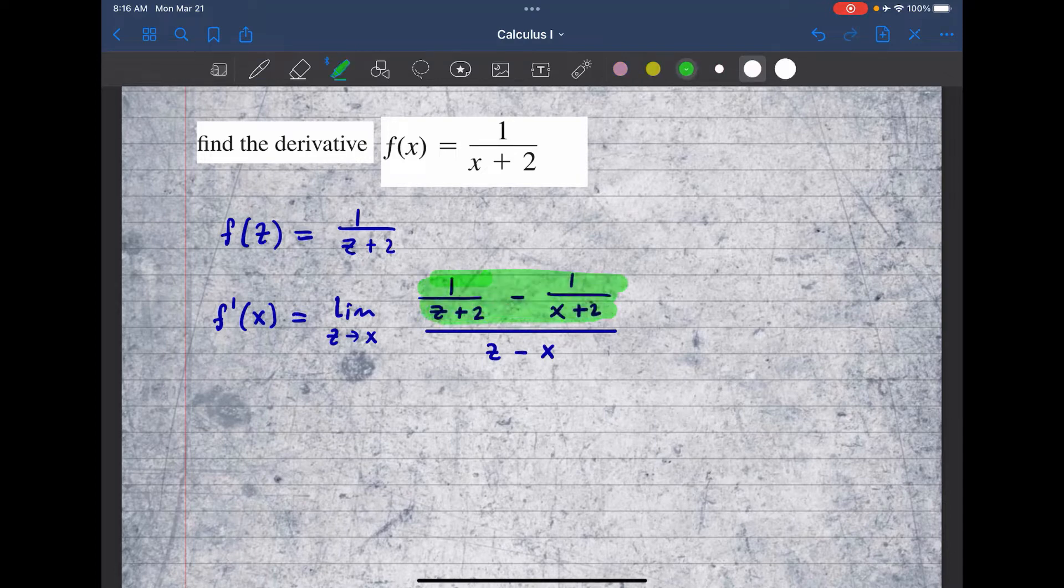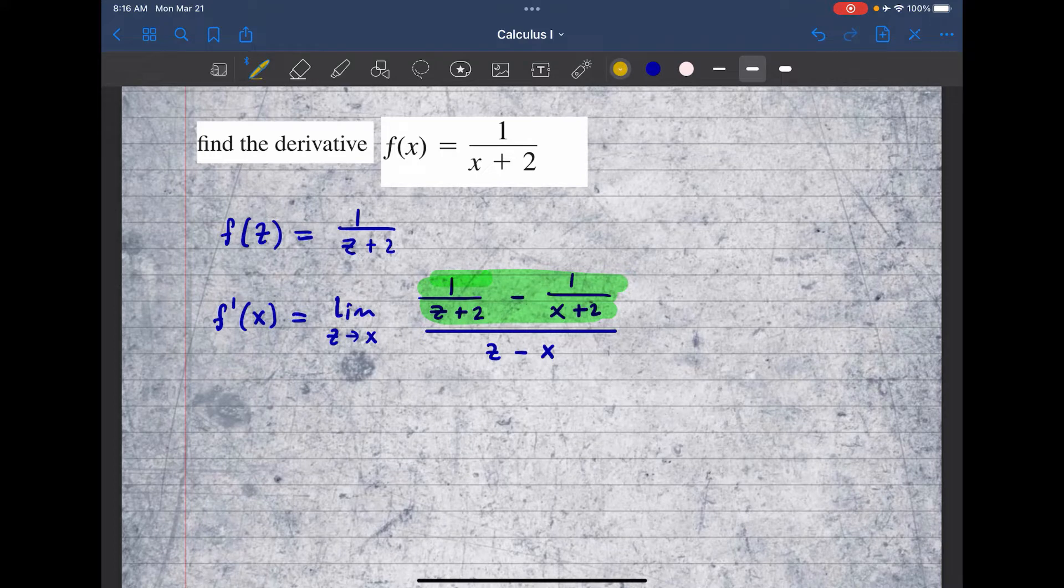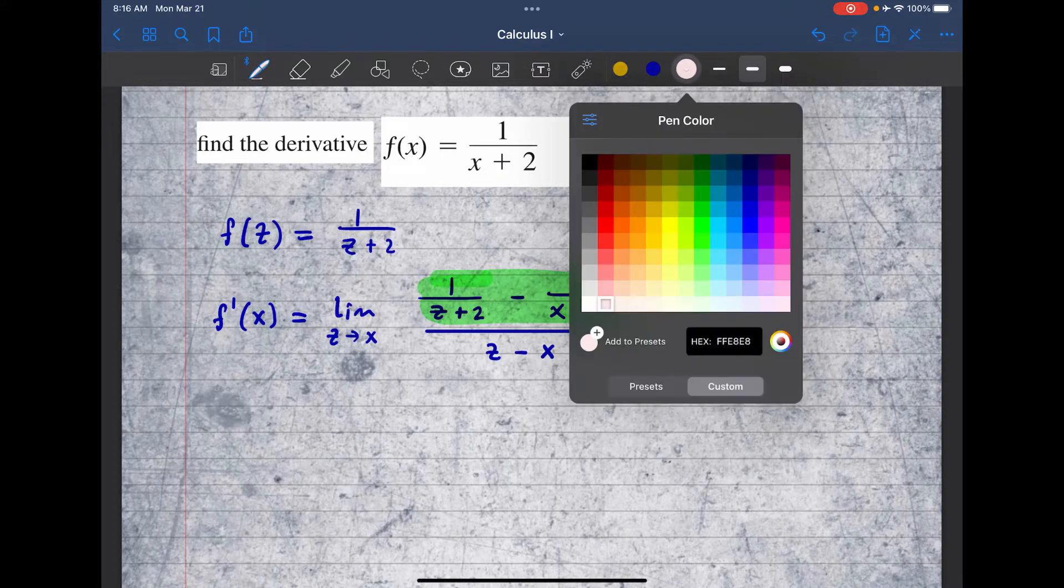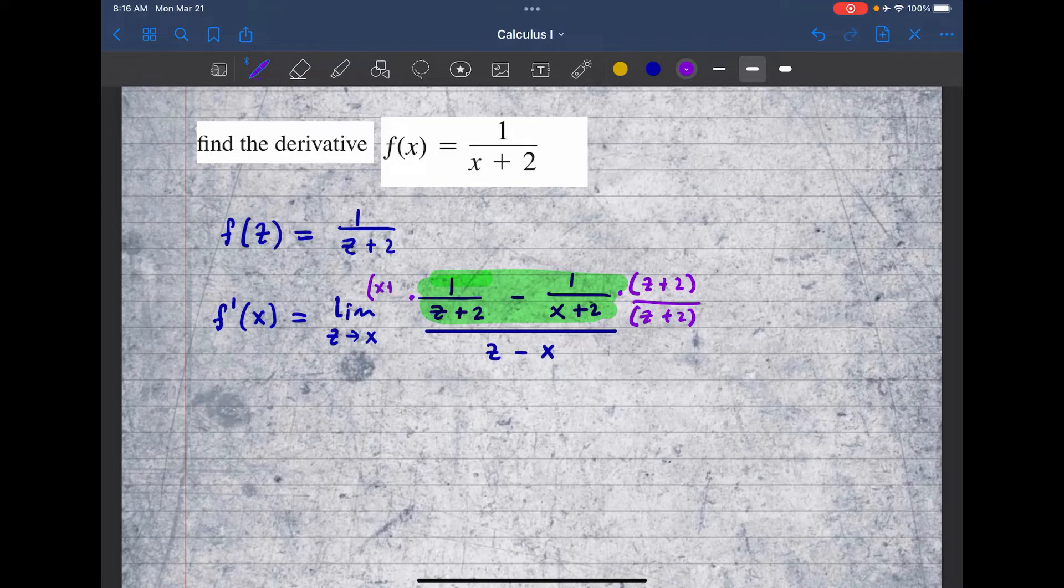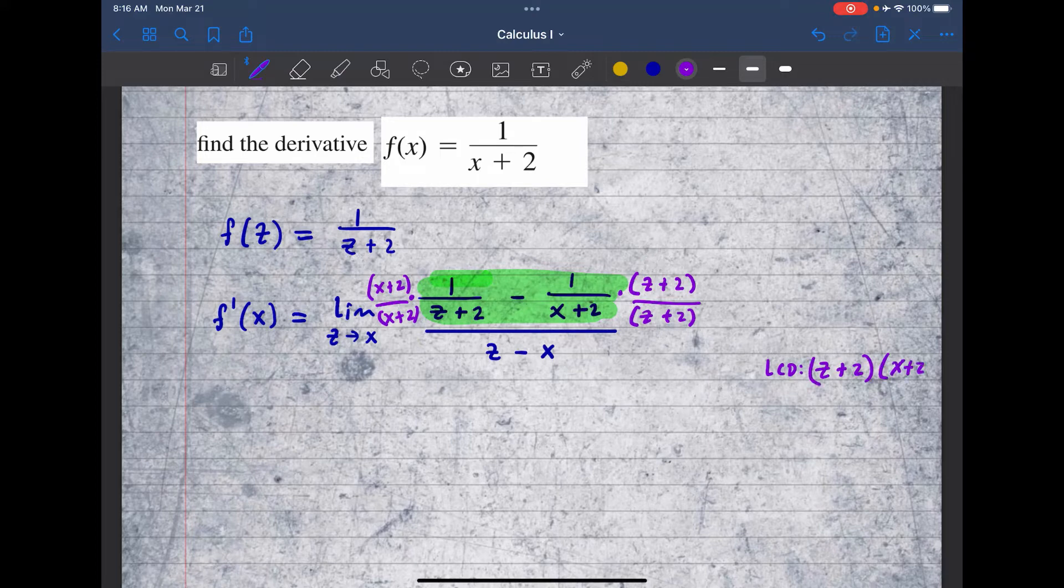And the goal here is to simplify this part right here very carefully by putting them into common denominators. So I'm going to multiply the second fraction with z plus 2 over z plus 2, and this one with x plus 2 over x plus 2. And then put them into common denominator because the least common denominator here is going to be z plus 2 times x plus 2.